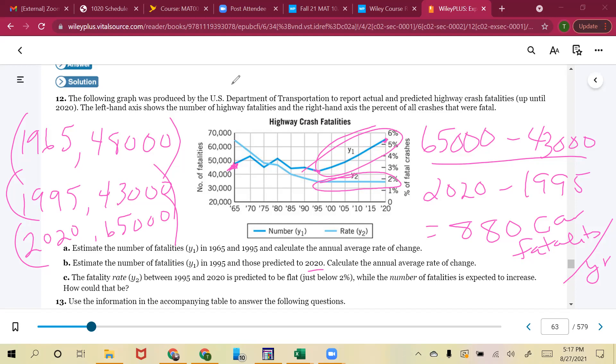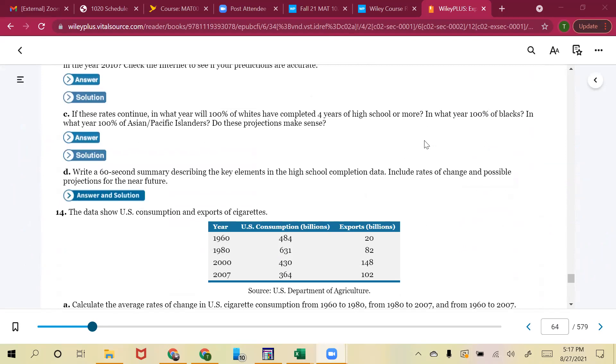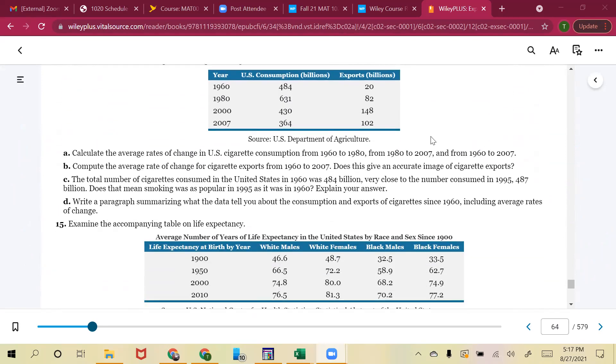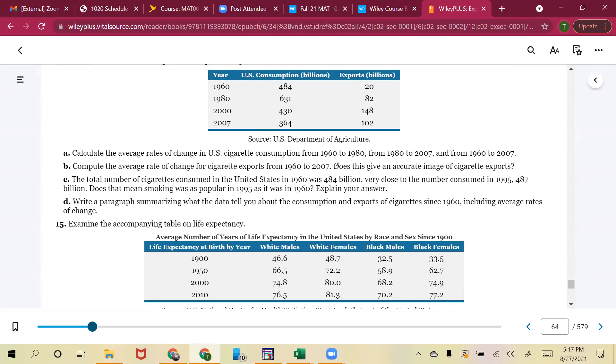So that was number 12. Let me clear this out. I was going to do number 14, but guys, it's the very same process. You're going to find 1960 to 1980, notice, be careful where it says cigarette consumption. So 1960 to 1980, you would use 1960 and 484 and 1980 to 631. Go through, find your average rate of change and do it again for 1980 to 2007, 1960 to 2007. Part B does switch to be exports, so you'd use like 1960 and 20 and 2007 and 102, but the math is still the same. I don't think there's a need for us to do it because it's exactly the same thing that we just got through doing.